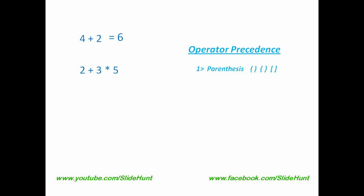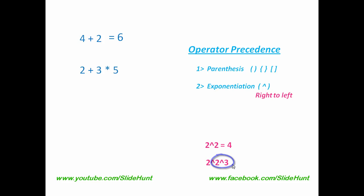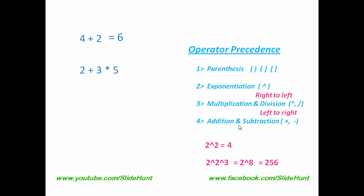Parentheses or brackets have the highest precedence. Next highest precedence is exponentiation. If there is more than one exponentiation, then we follow right to left. For example, 2 exponentiation 2 is equal to 4. But for 2 exponentiation 2 exponentiation 3, first we perform 2 exponentiation 3 which reduces to 8, then we perform 2 exponentiation 8 which equals 256. Next precedence is multiplication or division — they have the same precedence, and for the same precedence we follow left to right. And the last one is addition and subtraction, for which we also follow left to right.